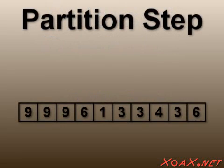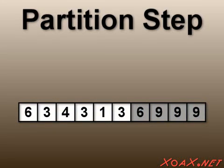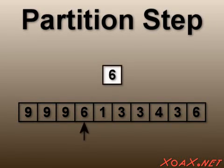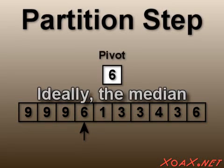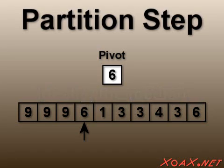As before, this Quicksort algorithm relies on a basic partition step to split an array into two sections. We begin the partition step by selecting an element to be the pivot. Ideally, the pivot should be the median element, but it is chosen randomly to make the selection process quicker. For this example, assume that 6 was randomly chosen.